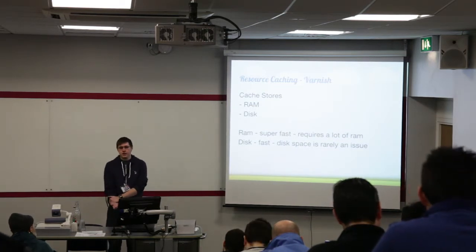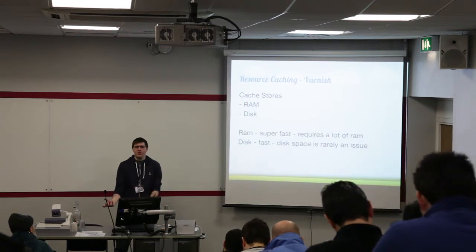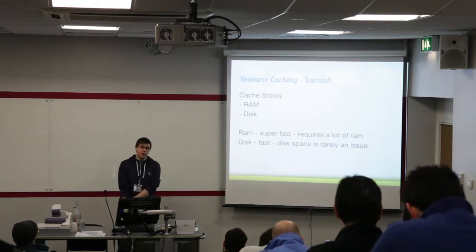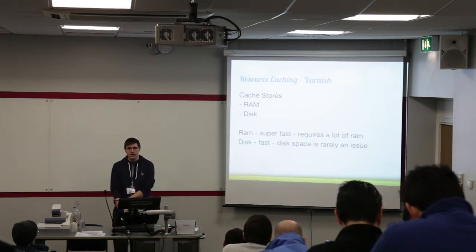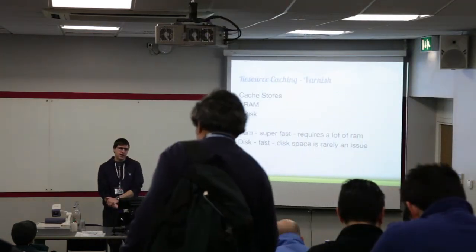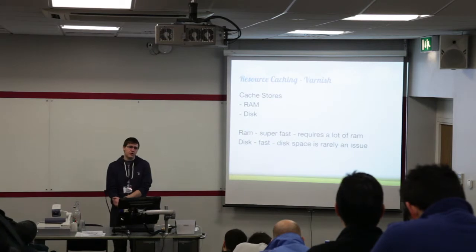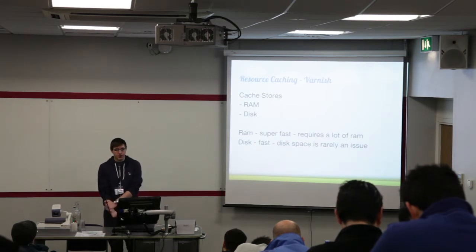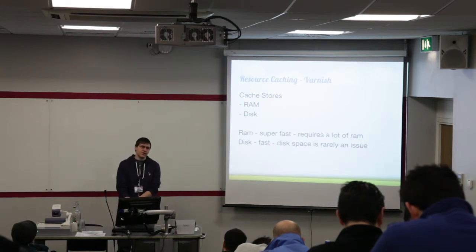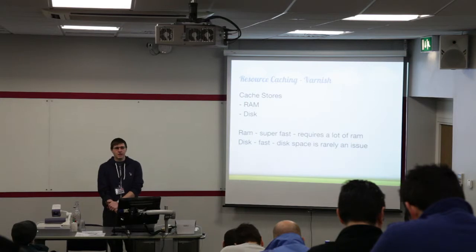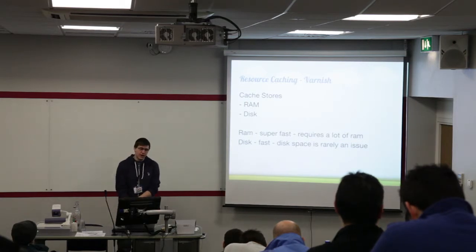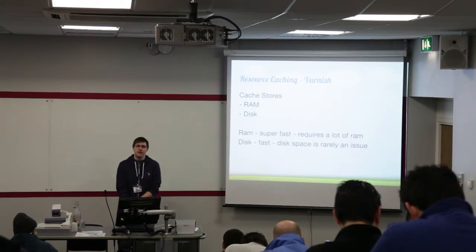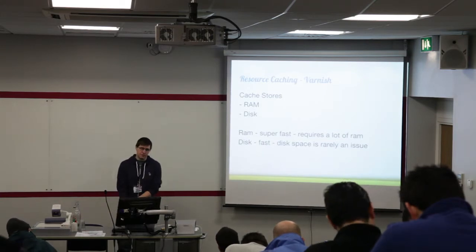A cache store is basically a file with data. It has two options: RAM and disk. RAM is super fast, but for larger sites you will require more memory. I did some benchmarks on my own site and found it was actually quicker not to have Varnish, because I was using Varnish as a RAM store and Apache and Varnish were fighting for resources constantly. So if you have servers with 8GB or more of RAM, Varnish with RAM storage works well. Disk is fast — not as fast as RAM, but most servers have hundreds of gigabytes these days.